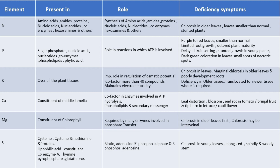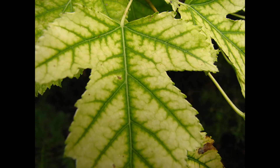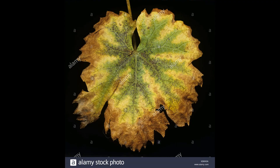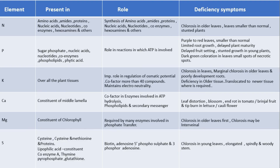The third compound is potassium. It is present overall in plant tissues. Its important role is in regulation of osmotic potential. As a cofactor, more than 40 compounds maintain electroneutrality. Deficiency symptoms are chlorosis in leaves — marginal chlorosis in older leaves — and poorly developed roots. Deficiency appears in older tissue first.